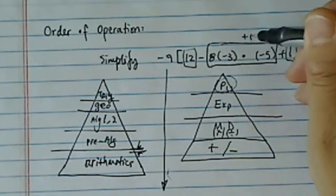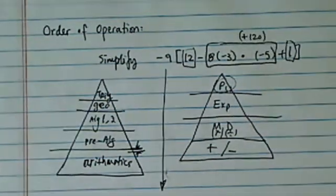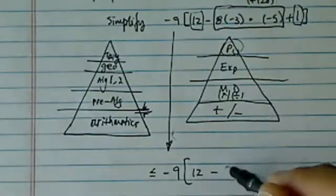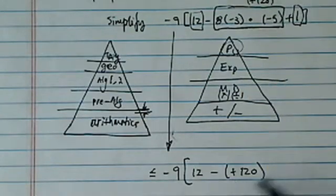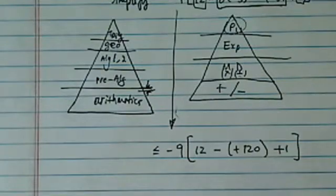Minus times minus makes a positive 120. So this whole chunk is plus 120, and then we'll have a plus 1.